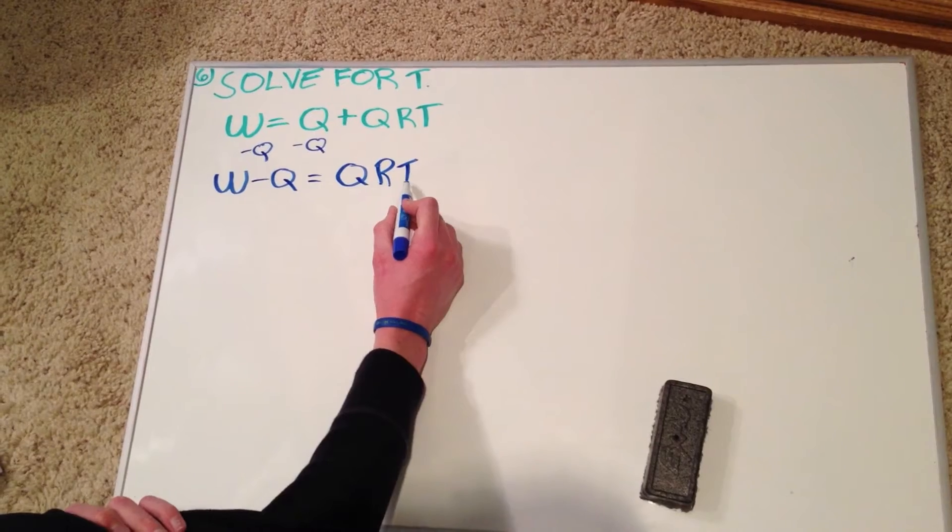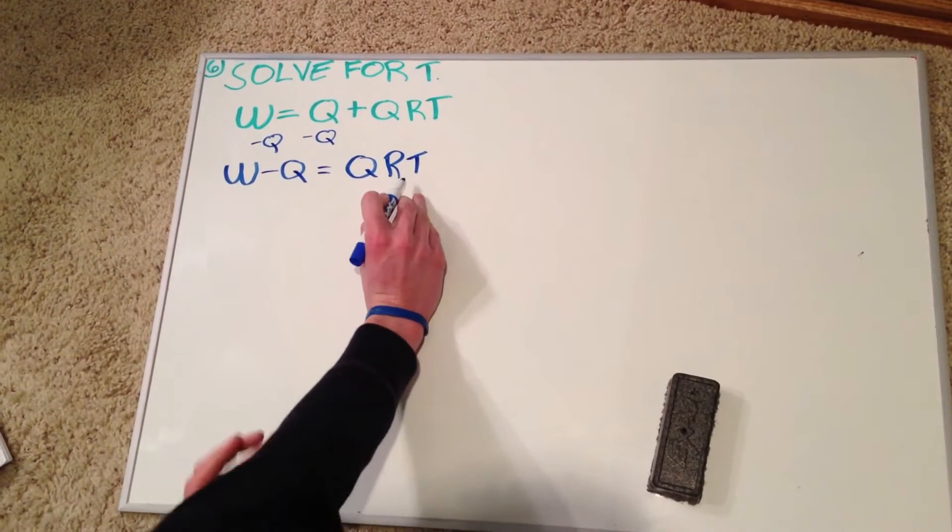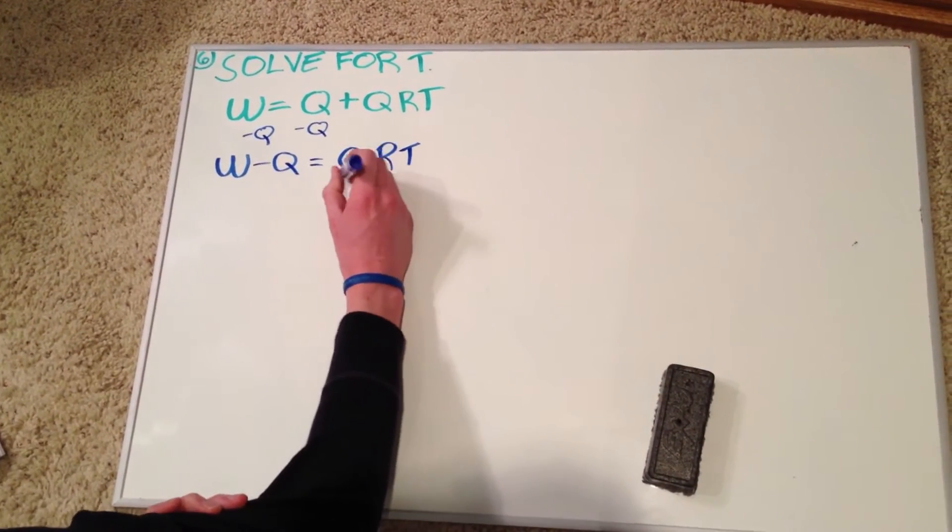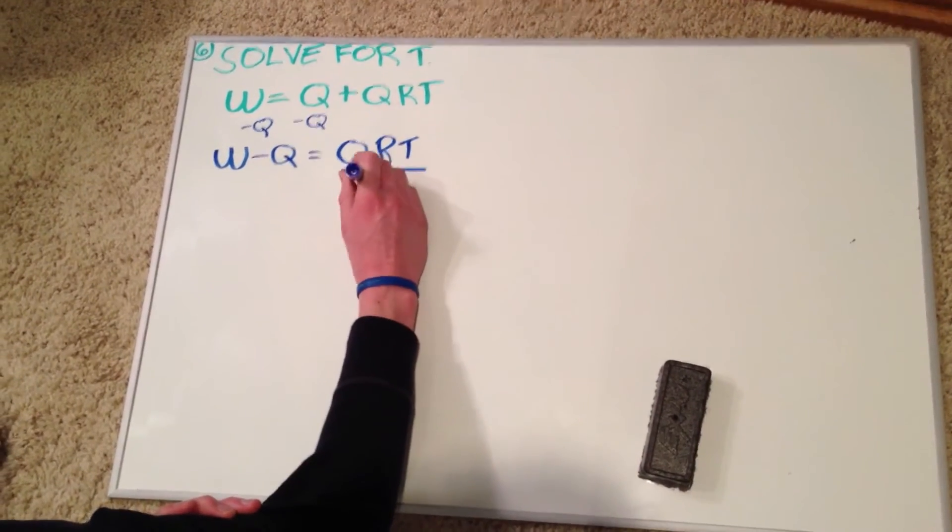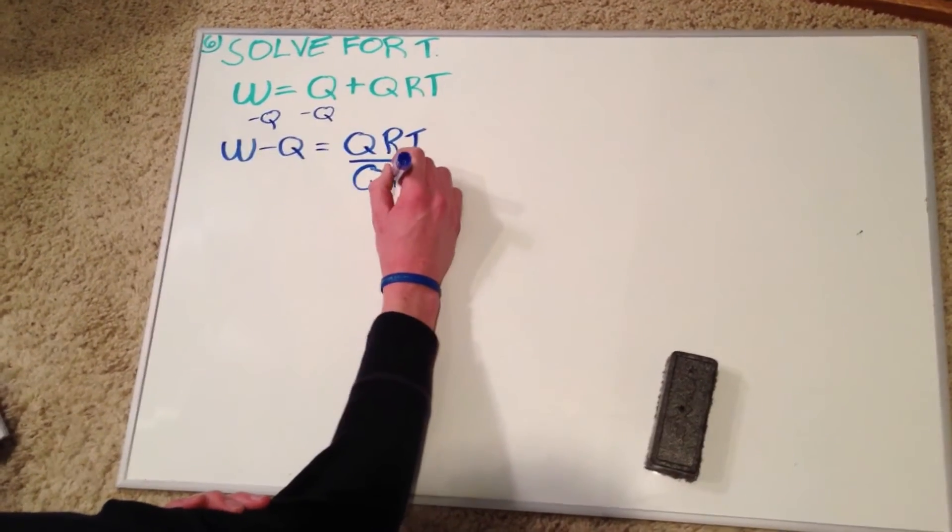Now to get T by itself, because Q and R are being multiplied, we're just going to divide by QR. So we'll divide by QR.